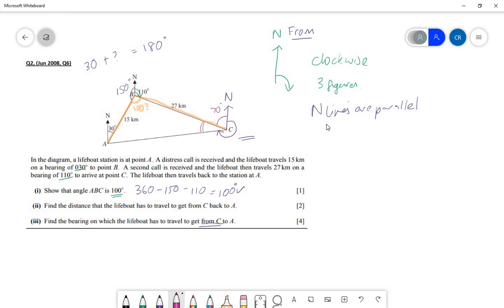So bearings are measured from north going clockwise, and you write them in three figures. All of your north lines are parallel. And when you're trying to identify which bearing to go for, read from and draw the north line.